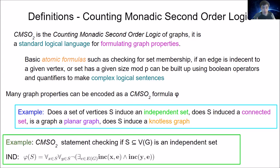Let's look at an example CMSO₂ statement checking if a subset S of vertices is an independent set. Our CMSO₂ statement φ takes as input the set S and checks: for all x in S and for all y in S, it is not true that there exists an edge e such that x is incident to e and y is incident to e. This evaluates to true if and only if S is independent, meaning no two vertices in S share an edge.